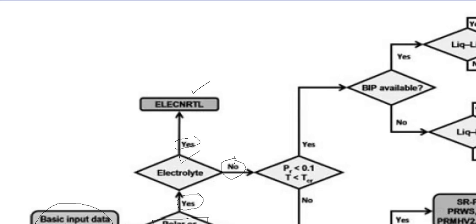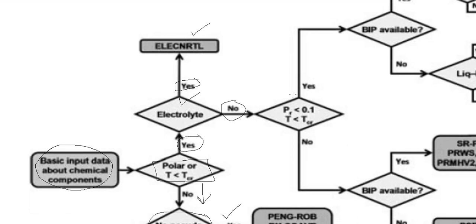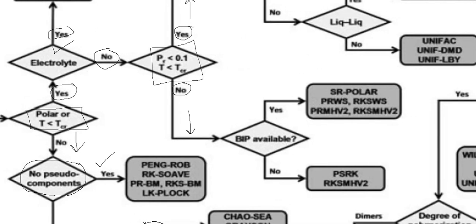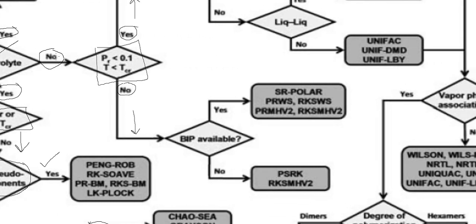If it is a polar but non-electrolytic system — meaning no electrolytes are present but it is polar — then we check two conditions: reduced pressure (Pr) less than 0.1 bar, and system temperature less than the critical temperature. If these conditions are satisfied, we move in one direction; if not, we move the other way. If these conditions are not satisfied, we check whether binary interaction parameters are available.